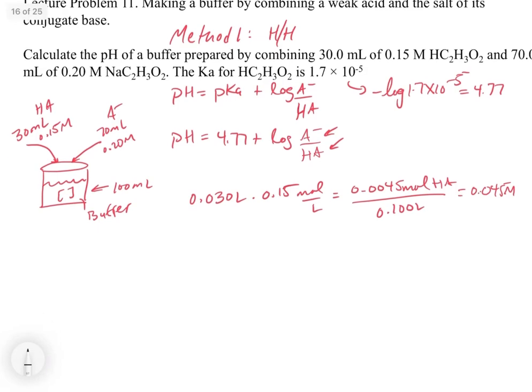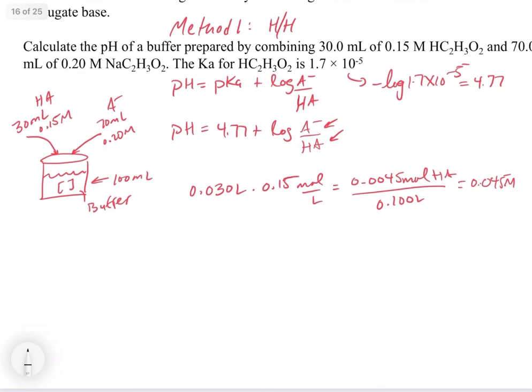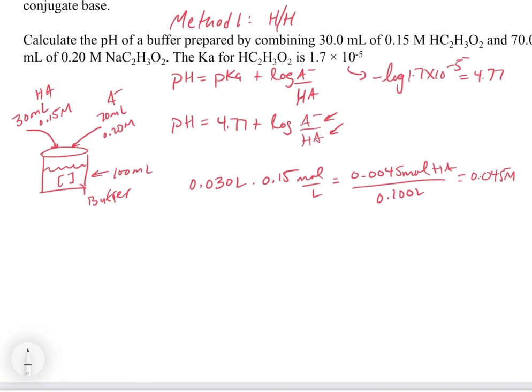And you know, if you want to use M1V1 is equal to M2V2, that's perfectly fine. There's nothing wrong with that. I just chose to do it this way for this particular case, but you could use M1V1 is equal to M2V2 and that will work fine. It would just be 30 times 0.15 is equal to X times a hundred. And so we can do the other one, which is 0.070 liters times 0.20 molar, moles per liter is equal to 0.014 moles divided by 0.100 liters. And so this gives us 0.14 molar.